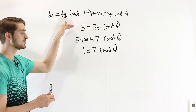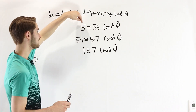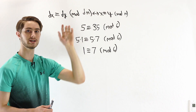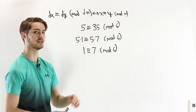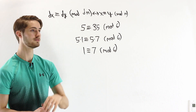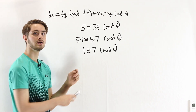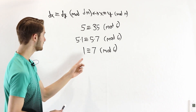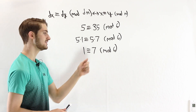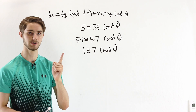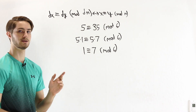We started with a true congruence: dividing 5 by 6 gives remainder 5, and dividing 35 by 6 also gives remainder 5. The resulting statement is also true: dividing 1 by 6 gives remainder 1, and dividing 7 by 6 also gives remainder 1. So we were able to cancel out that prime factor.